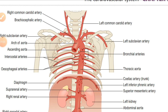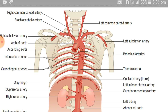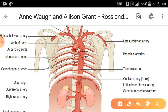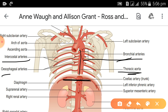The descending thoracic aorta gives off many paired branches that supply the walls and organs of the thoracic cavity. In the diagram, you can see the thoracic aorta and its branches: the bronchial arteries supplying the bronchi, the intercostal arteries, and the esophageal arteries.